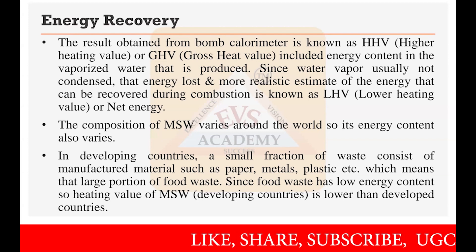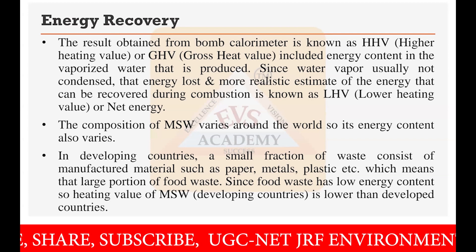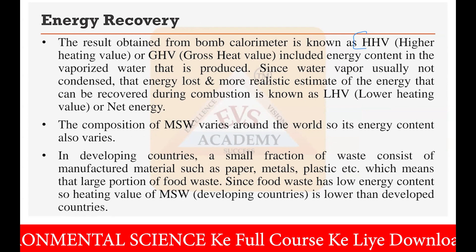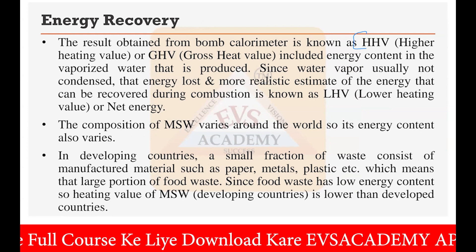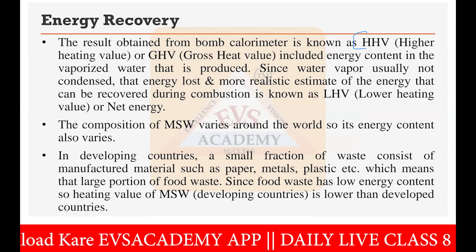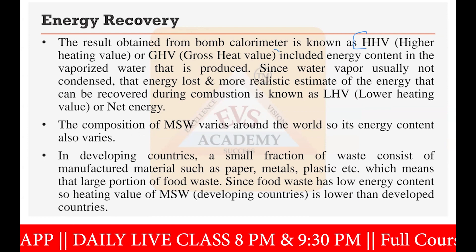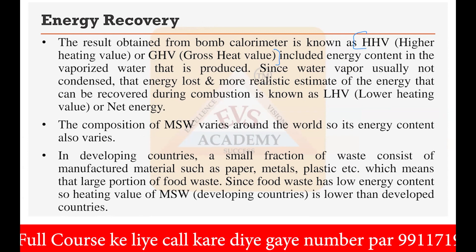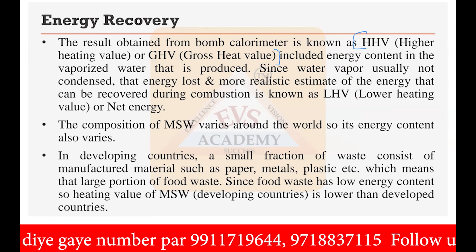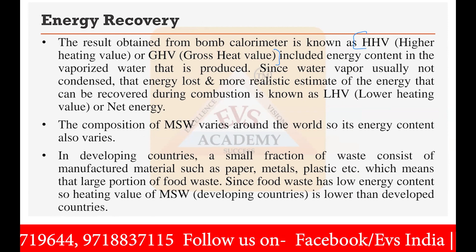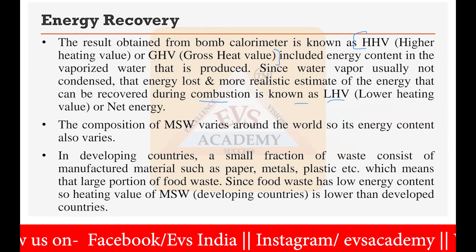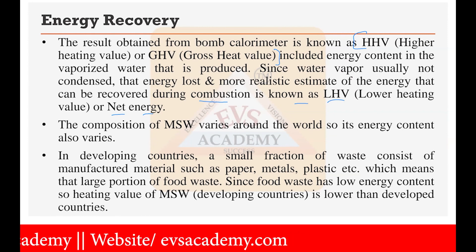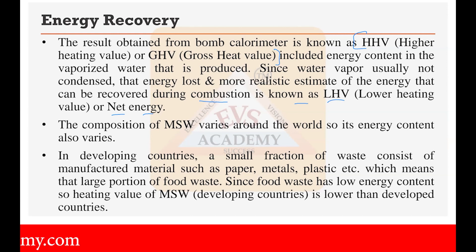In the bomb calorimeter you get either HHV (higher heating value) or GHV (gross heat value). GHV includes the energy content of the vaporized water that is produced. In HHV you have only the material's heating value, while in GHV you have the total heat value — the energy given by the product plus the energy associated with the vapor present. Since water vapor is usually not condensed, that energy is lost. The more realistic estimate of the energy that can actually be recovered is known as the lower heating value or net energy, obtained after accounting for the vaporization of water.